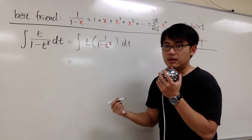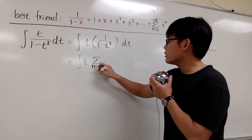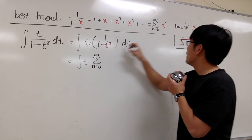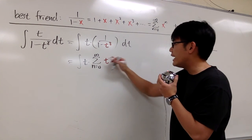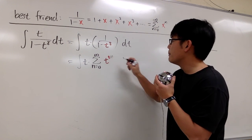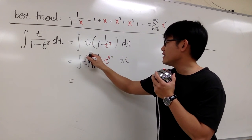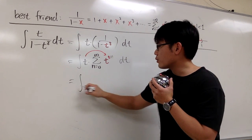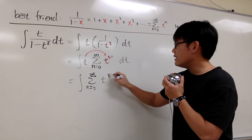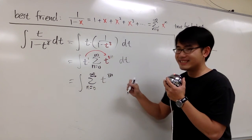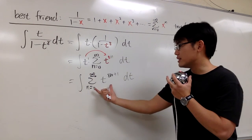Working with the series, we have the integral of t times sigma from n equals 0 to infinity. We have t to the 8th substituted into x, raised to the n power, giving us t to the 8n power. With one more t in the front, we multiply it inside, so we have the integral of the summation from n equals 0 to infinity of t raised to the 8n plus 1 power.